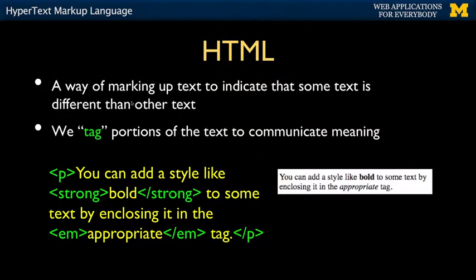The tagging carries meaning. So less-than P greater-than says start a paragraph. Less-than strong greater-than means start bold. Slash strong says stop bold. Less-than, greater-than, and slash are special characters — we have ways to represent those. The idea is that this is a user-viewable markup format.